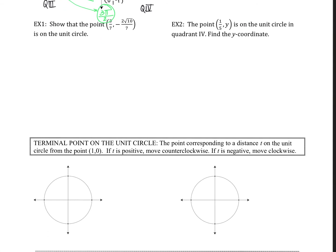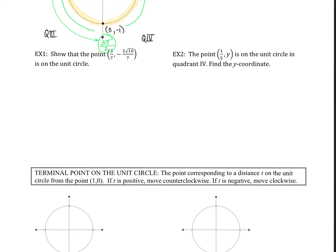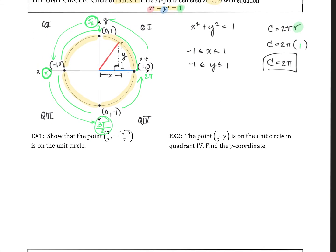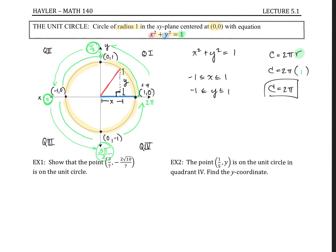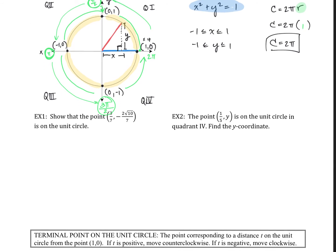For the first example, we're going to show that the point (3/7, -2√10/7) is on the unit circle. How would we prove that? We need an equation. Thankfully, we have the equation of the unit circle: x² + y² = 1. If I plug the points I'm given into this equation and it equals 1, then I know it's on the circle.